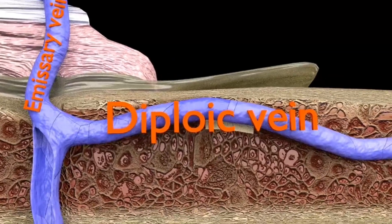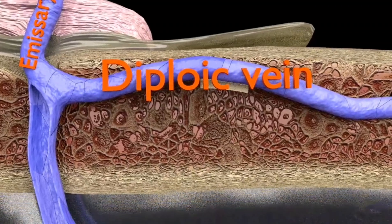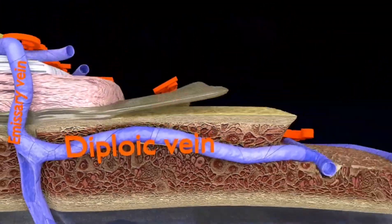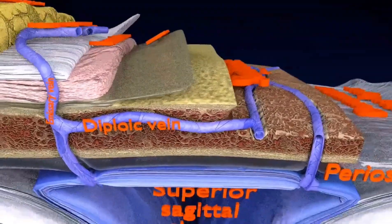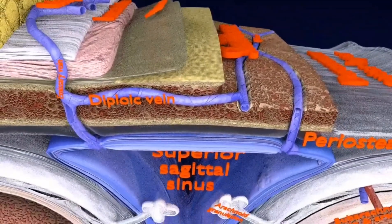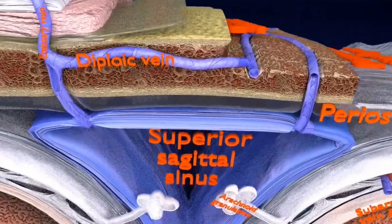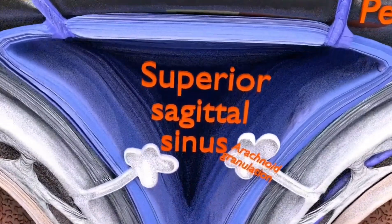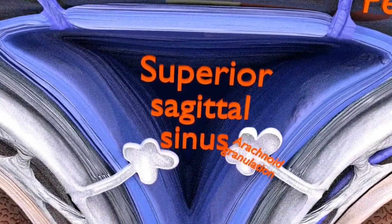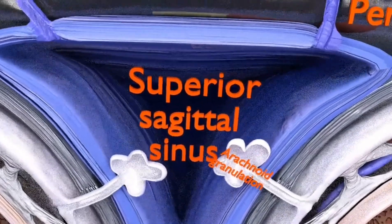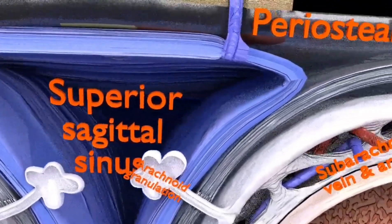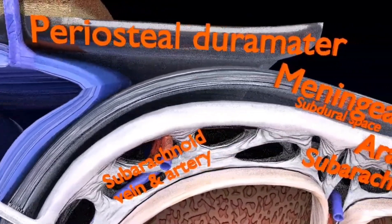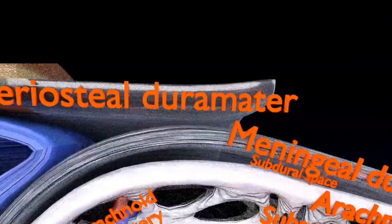The emissary veins connect the veins of the scalp to the diploe veins and intracranial venous sinuses. Here you can see an emissary vein draining intracranially into the superior sagittal sinus. You can also observe small projections of the arachnoid mater into the dural sinuses, known as arachnoid granulations, which allow subarachnoid CSF to re-enter the circulation via the dural venous sinuses.